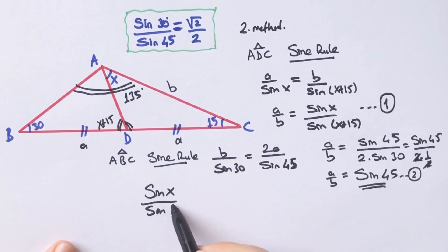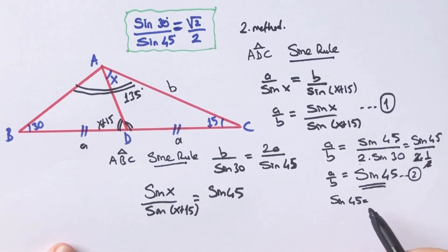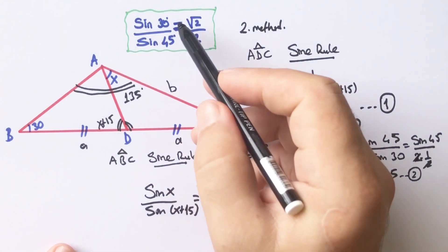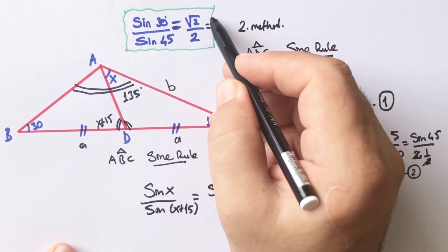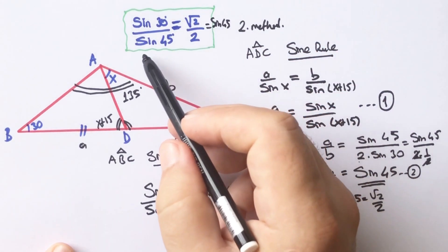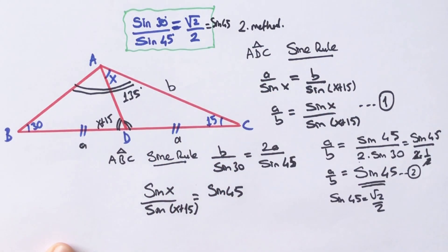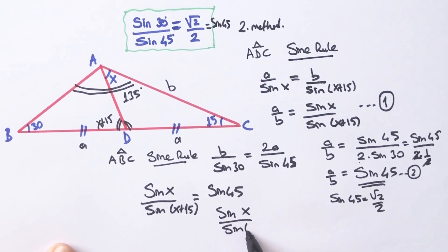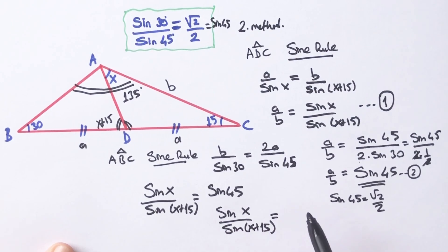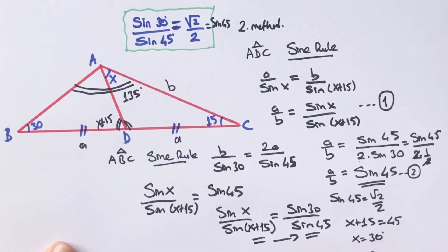If we equalize these two equations, sine x over sine (x plus 15) must equal sine 45. We know that sine 45 equals root 2 over 2. That means we can calculate sine 30 over sine 45 instead of sine 45. Therefore sine x over sine (x plus 15) equals sine 30 over sine 45. So x plus 15 equals 45. Therefore x equals 30 degrees.